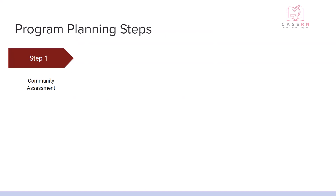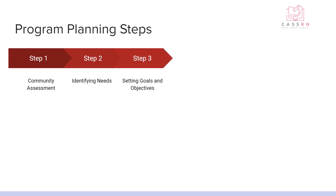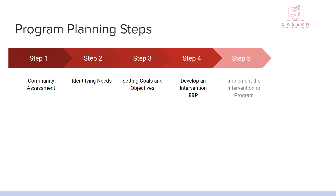We have to first assess our community so that we can identify the needs. After that we're going to set up some goals and objectives. We're going to develop an intervention and we want to make sure we do something called evidence-based planning or evidence-based programs. Then we're going to implement the intervention or the program and then of course we need to evaluate it.